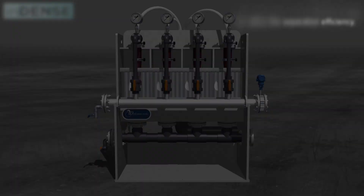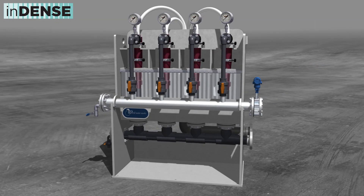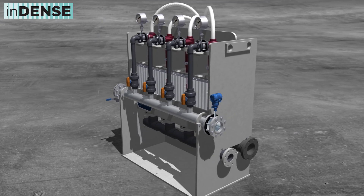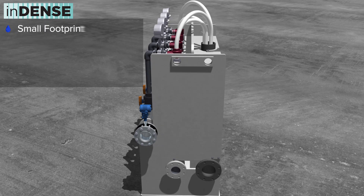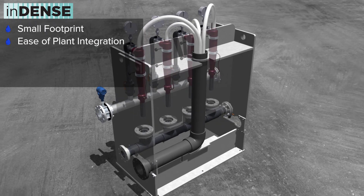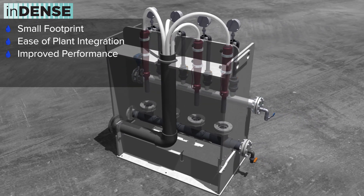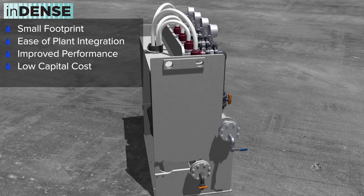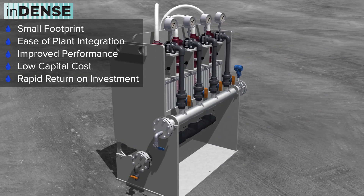The InDense Gravimetric Selection Technology is specifically designed to selectively waste biomass at wastewater treatment facilities. With its small footprint and ease of plant integration, InDense provides the ability to improve performance at a low capital cost, providing a rapid return on investment.